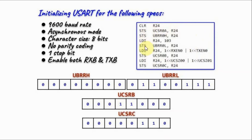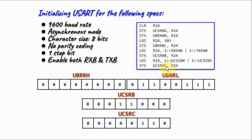This is the complete assembly code to initialize the USART. First, we clear control and status register A, then clear the baud rate high register. We store decimal 103 into the baud rate low register for 9600 baud. Then we load control and status register B with the byte to enable transmitter and receiver, and load register C with the byte for the remaining specifications.